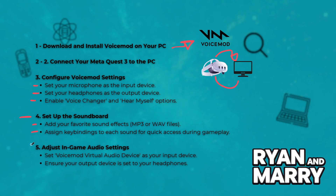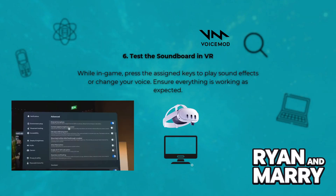Step 5: Adjust in-game audio settings. Launch your VR application and go to the audio settings. Set the Voicemod virtual audio device as your input device, and ensure your output device is set to your headphones.